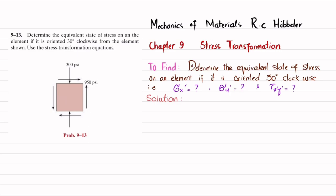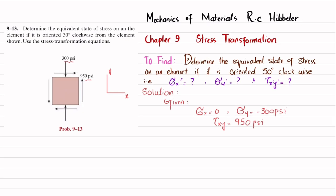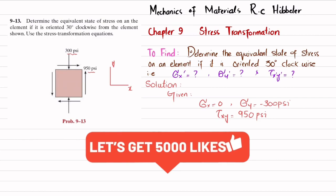Let's start with the solution. Along the x-axis we do not have any stress, so sigma x is equal to 0 and sigma y, that is compressive, is minus 300 psi. Also shear stress tau xy is plus 950 psi.